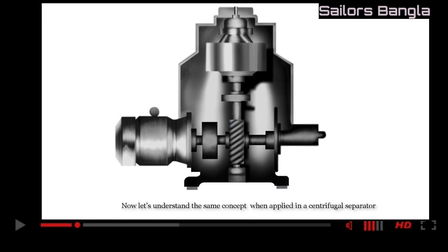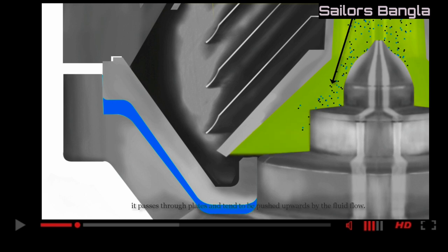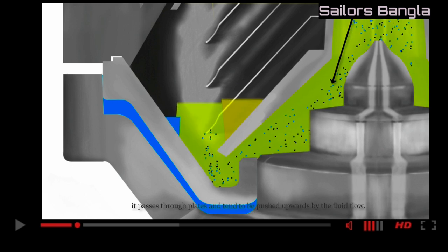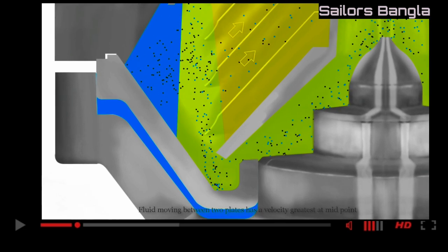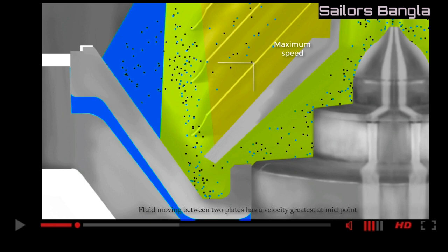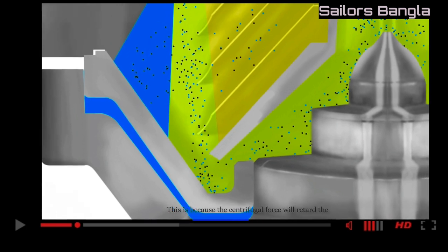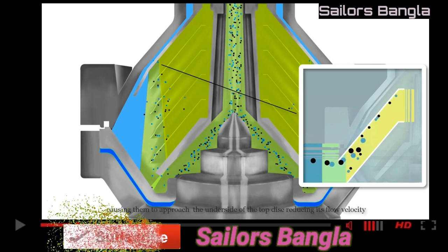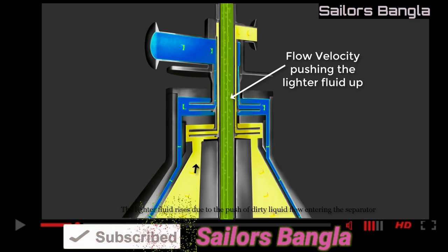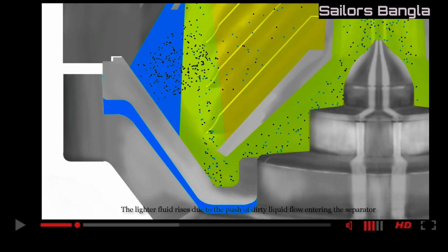Now let's understand the same concept when applied in a centrifugal separator. When the dirty oil enters the separator, it passes through plates and is pushed upwards by the fluid flow. Fluid moving between the two plates has a velocity greatest at midpoint and minimum when approaching the plates. This is because the centrifugal force will retard the horizontal component of the movement for the heavier particles, causing them to approach the underside of the top disc, reducing its flow velocity. The lighter fluid rises due to the push of dirty liquid flow entering the separator.